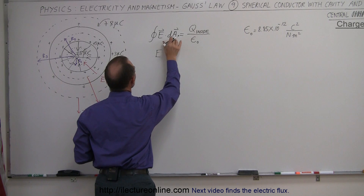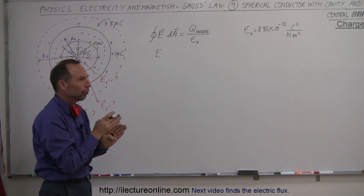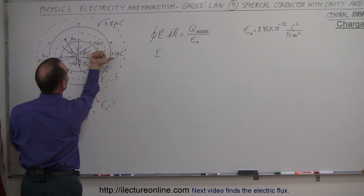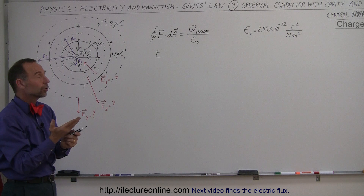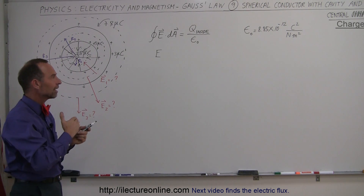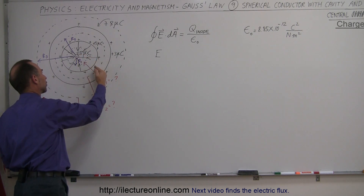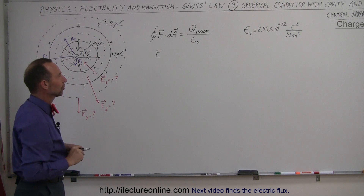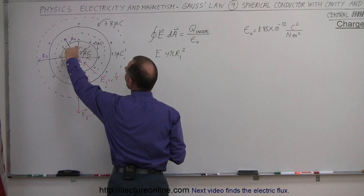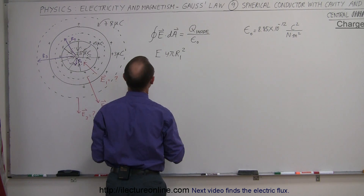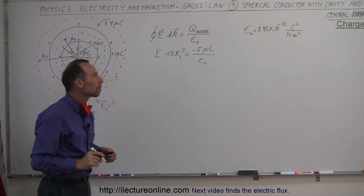We can say that E·dA — E times the area of that sphere — where the electric field will be directed parallel to the normal of the Gaussian surface. So we have a Gaussian surface here, and the normal sticks straight out while the electric field is either inward or outward, so they're parallel. We've taken the cosine of 0° or 180°; cosine of 180° is negative, indicating the electric field points inward. So E times the area — 4π R1² — equals Q inside divided by epsilon sub nought.